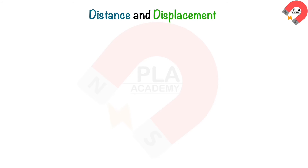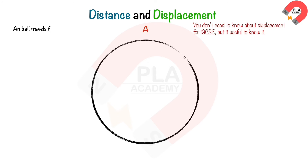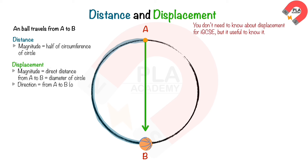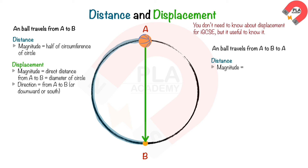Distance and displacement: you don't need to know about displacement for IGCSE, but it is useful to know. When a ball travels along a circular track from point A to point B, the distance travelled from A to B is half of the circumference of the circle. The displacement is the diameter of the circle, and its direction points from A to B, or downward or south. When the ball travels back to point A, the distance travelled is equal to the circumference of the circle. The displacement is equal to zero.